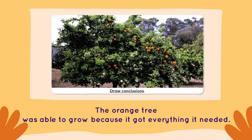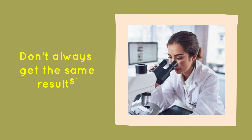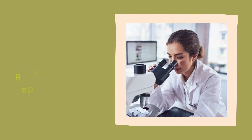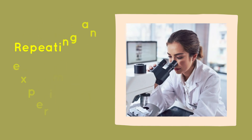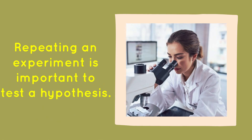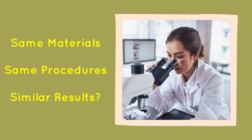The seed grew into a tree, just like the trees in the garden. This orange tree was able to grow because it got everything it needed. When doing tests, scientists don't always get the same results, but when results do repeat, they know their conclusions are supported. Repeating an experiment to see if similar results are achieved is an important way of testing a hypothesis. Scientists use the same materials and follow the same procedures because they want to see if they get similar results.